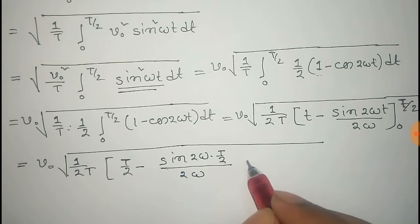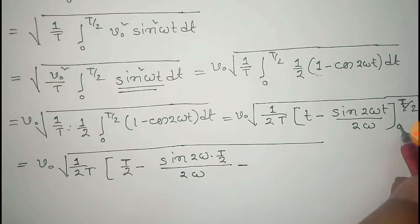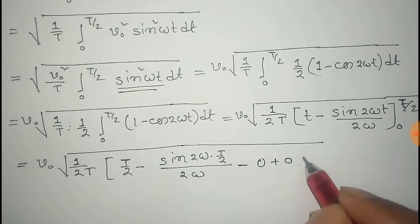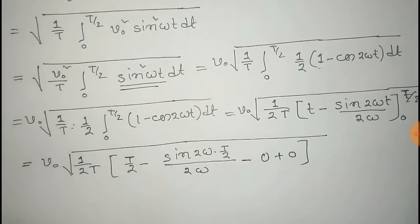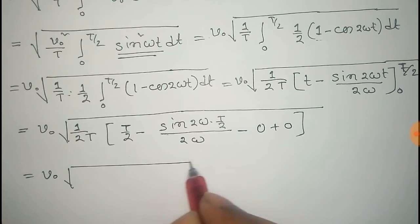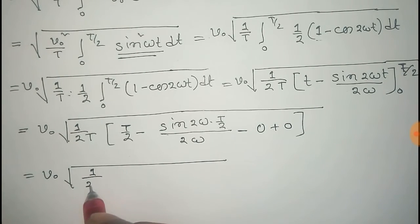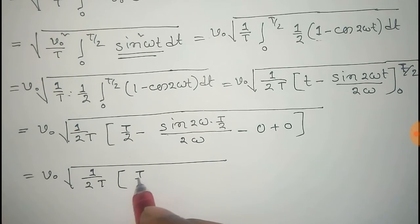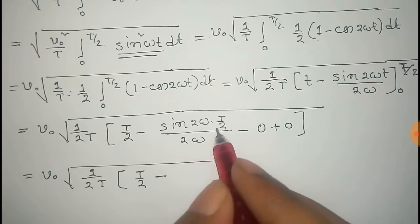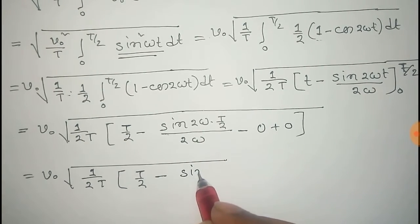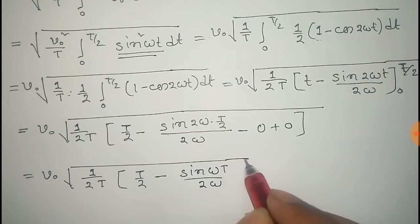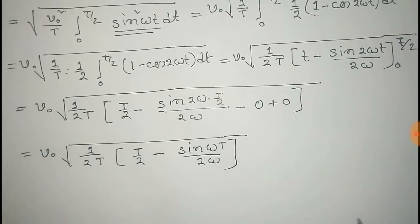Putting in the lower limit of 0, both terms give zero since sin(0) = 0. So this equals V₀ times the square root of 1/(2T), and the expression becomes T/2 − sin(ωT)/(2ω).